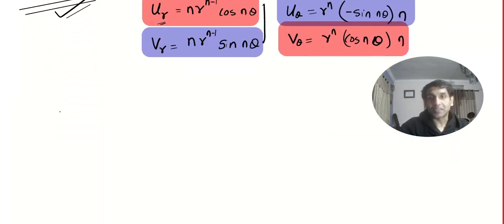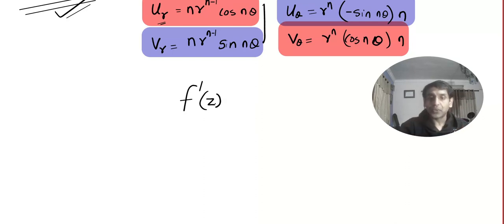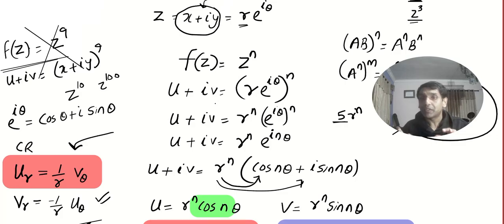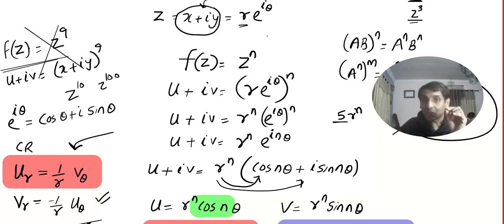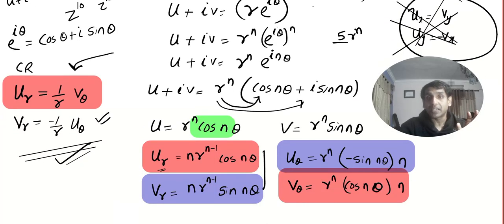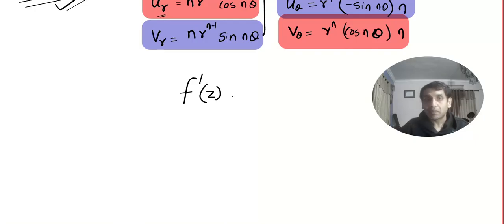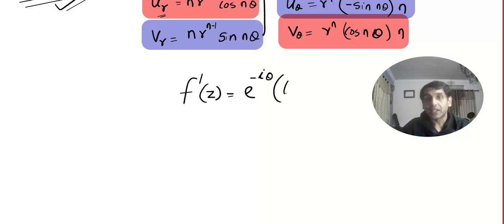Now one more thing: suppose you want to find the derivative of the function. As I always tell you, the derivative of real-valued functions and complex-valued functions are the same. I know the derivative is n·z^(n−1), but if you want to find it with the help of the CR equation in polar coordinates, the formula is f'(z) = e^(−iθ) · (u_r + i·v_r).